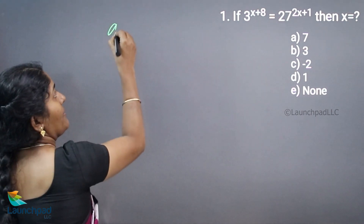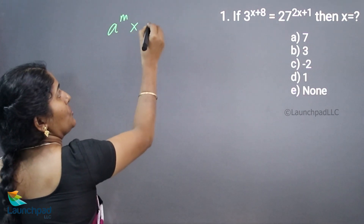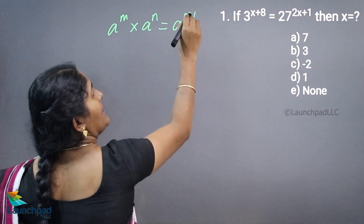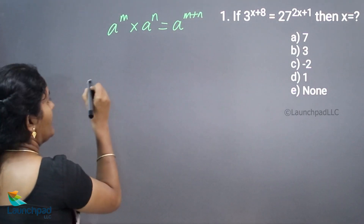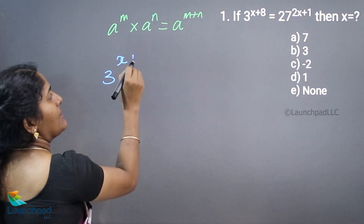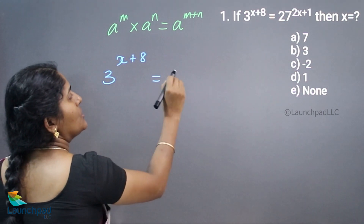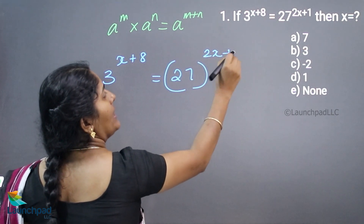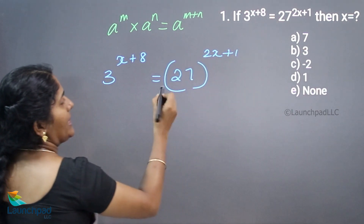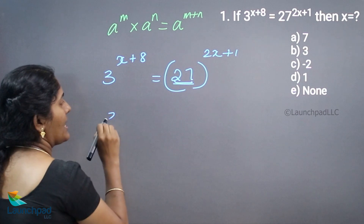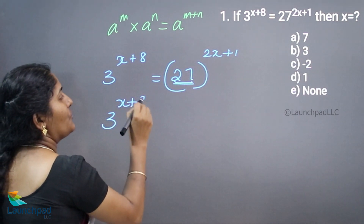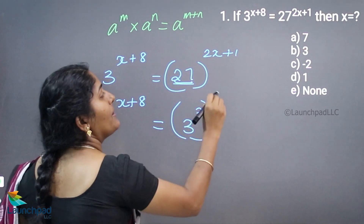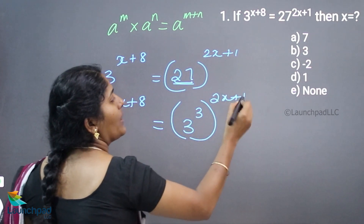Based on the power rule, a^m into a^n is equal to a to the power of m plus n. Here, 3 to the power of x plus 8 is equal to 27 to the power of 2x plus 1. I can consider this 27 as 3 cubed, the whole power of 2x plus 1.